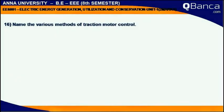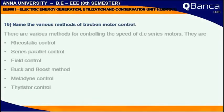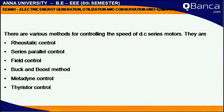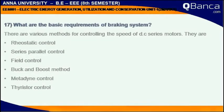Name the various methods of traction motor control. There are various methods for controlling the speed of DC series motors. They are: rheostatic control, series-parallel control, field control, buck and boost method, metadyne control, and thyristor control.